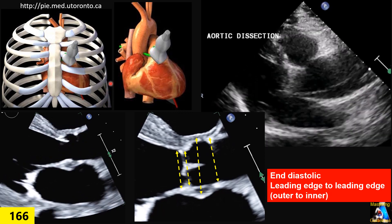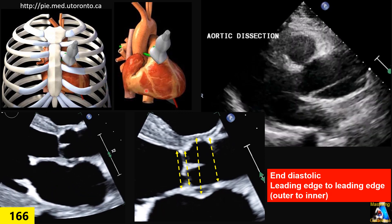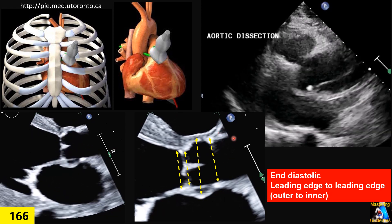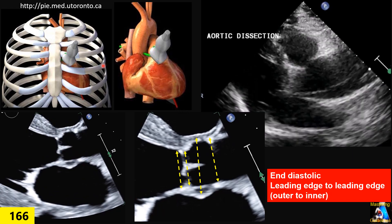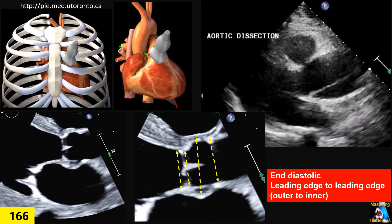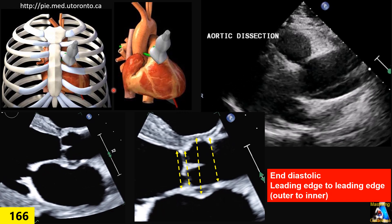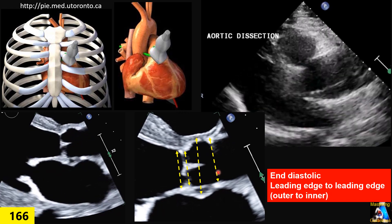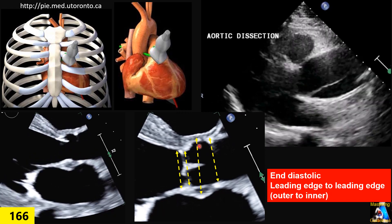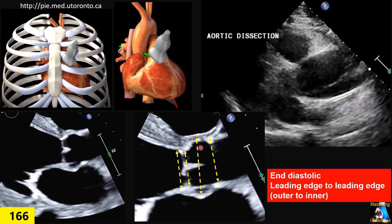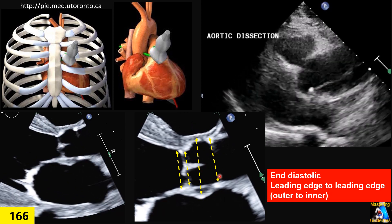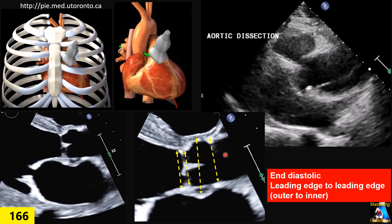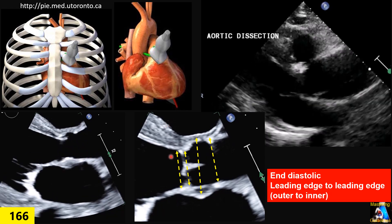In a classic transthoracic echo protocol in the parasternal long axis, our sector passes through the aortic root and beginning of the ascending aorta, but we cannot see the ascending aorta in the PLAX view. In the aortic root, we have four diameters, but we usually only measure the sinus of Valsalva diameter in normal situations. The other three — sinotubular junction, surgical ring, and echocardiographic annulus — are measured when we need aortic valve intervention.